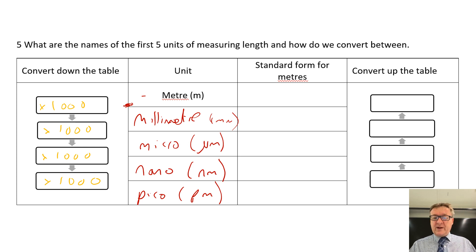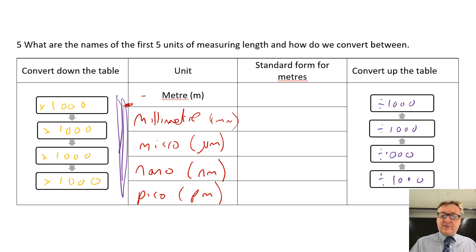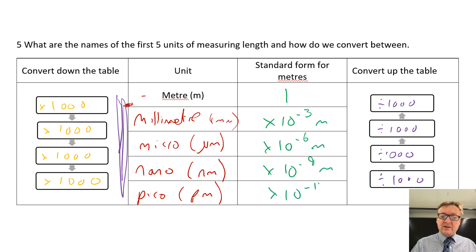Going in the opposite direction: from millimetres to metres you divide by a thousand, and each step up is also divide by a thousand. The main thing to remember is that order - as you go down the table it's times, and going up the table it's divide. In standard form: one metre, then times ten to the minus three, times ten to the minus six, times ten to the minus nine, times ten to the minus twelve metres.